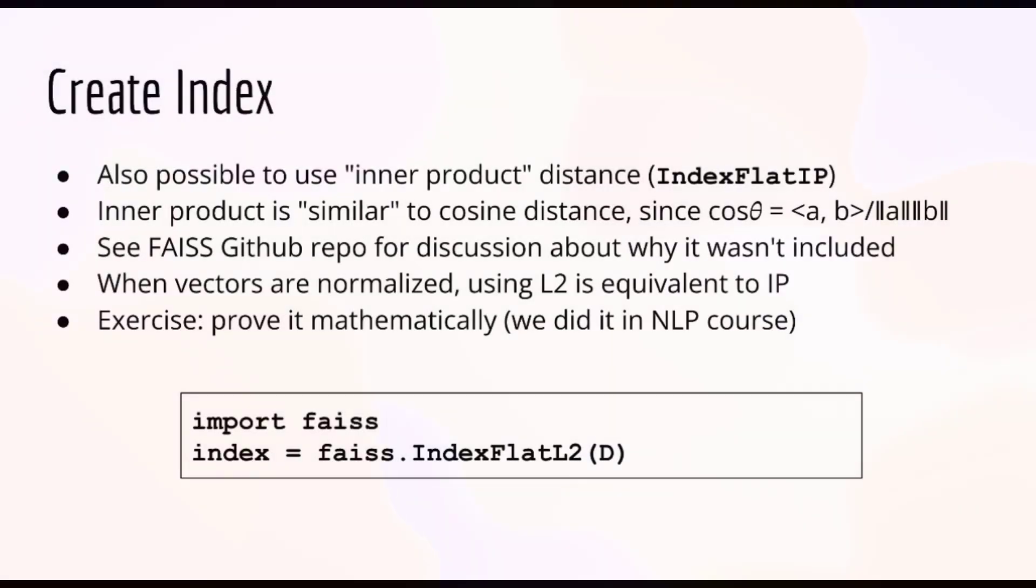Inside Python, you'll want to begin by importing the faiss library. The next step is to create an index by calling faiss.IndexFlatL2. This is where you pass in the dimensionality of the vectors you'll be using. For the purpose of this course, we'll stick with L2 distance, although others are possible, such as the inner product distance.